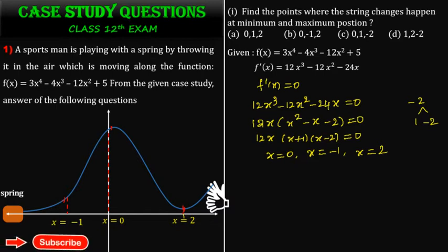So the critical points are x = 0, x = -1, and x = 2. At these positions, the curve increases or decreases. The answer corresponds to option B. This concludes question 1.